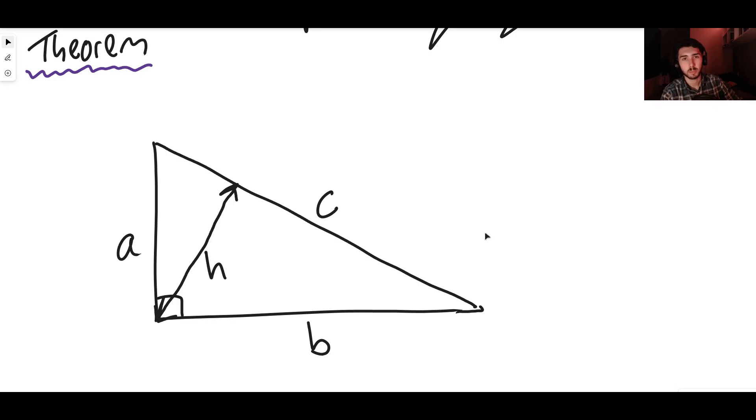There's something else though. If we define this other length h, the altitude of the triangle, to be the height from the hypotenuse perpendicularly up into the right angle between a and b.